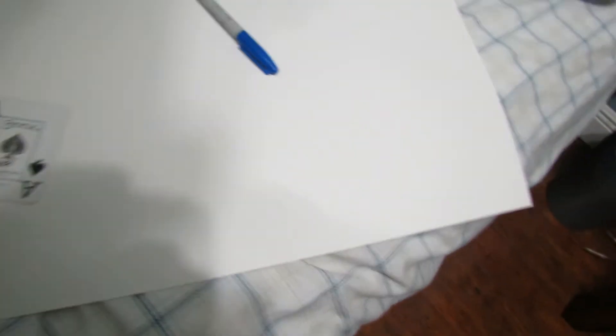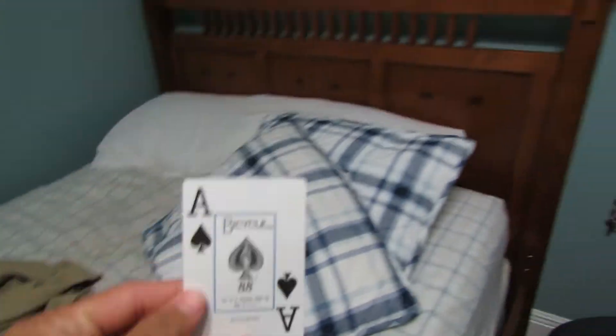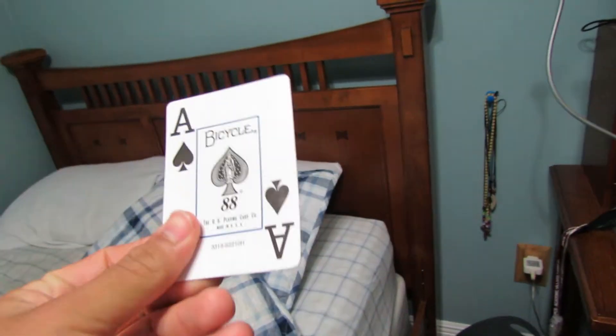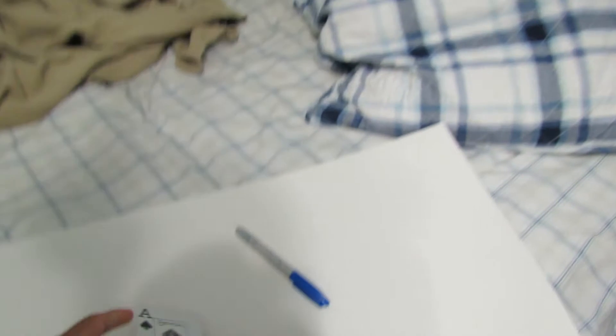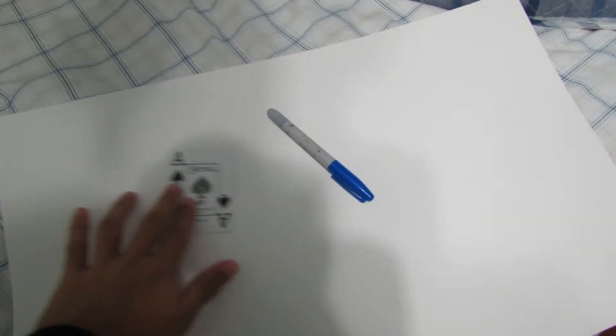Okay, so these are our materials. We have the ace of spades playing card that's gonna be our planchette. We're gonna put pen caps or something through it so it can move around. We have a big whiteboard, we have a Sharpie to write all the stuff on it, got a pen, we're gonna put the pen cap through here, more pen caps.